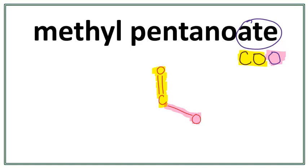Okay, so we have our functional group COO drawn in. Let's work on the parent chain. The parent chain is from the carboxylic acid. So this pent right here tells us that there are 5 carbons in the parent chain.